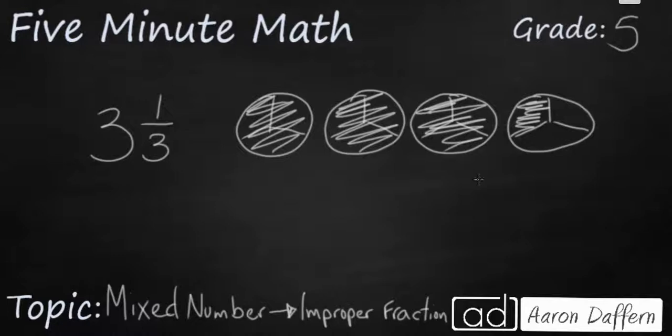What we have here is 3/3 plus 3/3 makes 6/3 plus 3/3 make 9/3 plus that extra third over there. It's going to make 10/3.